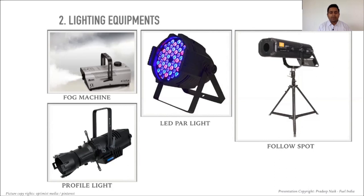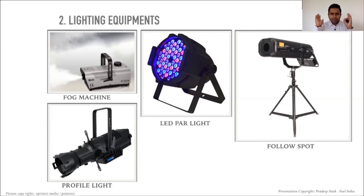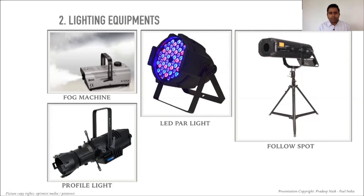A follow spot dims the entire venue lighting and creates a circular spot focus on the person performing, speaking, or entering — for example, a speaker breaking through a screen at a product launch. Its main purpose is to highlight one particular object or person and draw the audience's attention to that point while the rest dims. It is mostly operated manually and is usually positioned right behind the console, centered toward the stage.